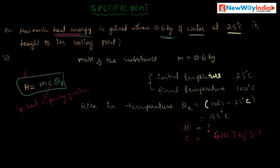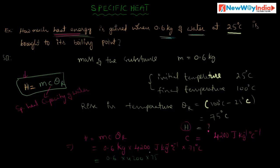Now we substitute these values in the formula. H is equal to M C theta R. M is equal to 0.6 kg, multiplied by C which is 4200 joule kilogram inverse degree centigrade inverse, and theta is equal to 75 degree centigrade. The kilogram and kilogram inverse cancel, and degree centigrade and degree centigrade inverse also cancel, leaving the value in joules.